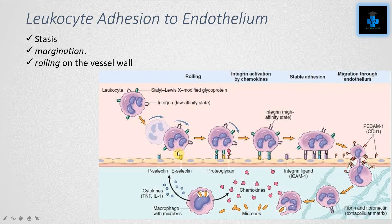This weak interaction allows the rolling of the leukocyte even with the pressure of running blood. The phagocytes at sites of injury release some chemicals which convert this weak affinity to strong affinity by binding of the endothelium glycoprotein. Now the leukocyte has to pass to the extracellular space.